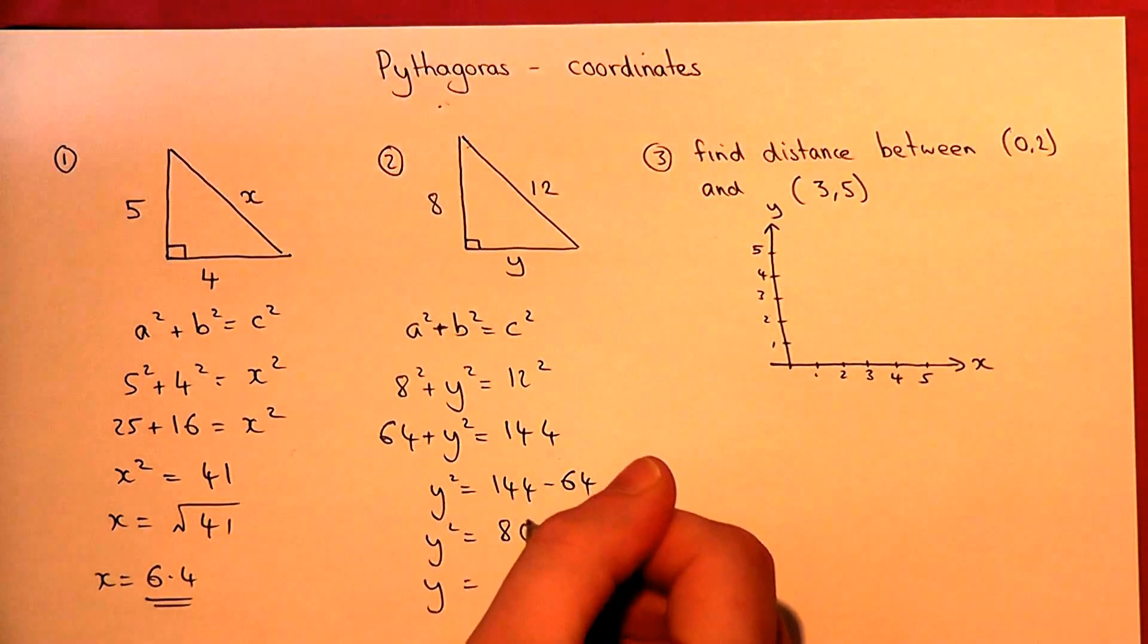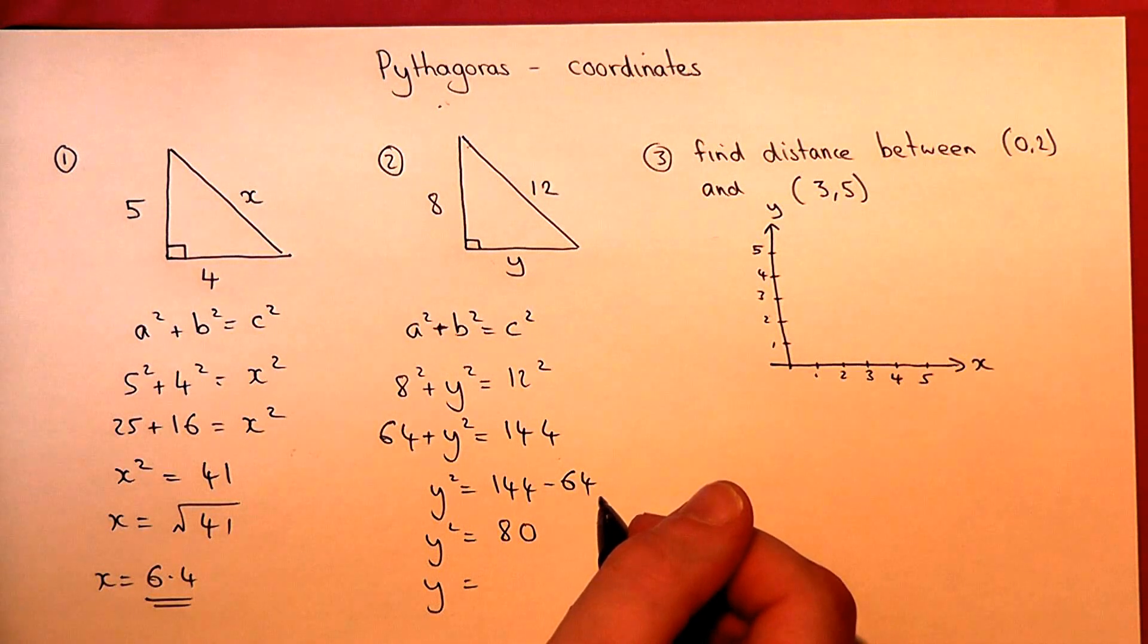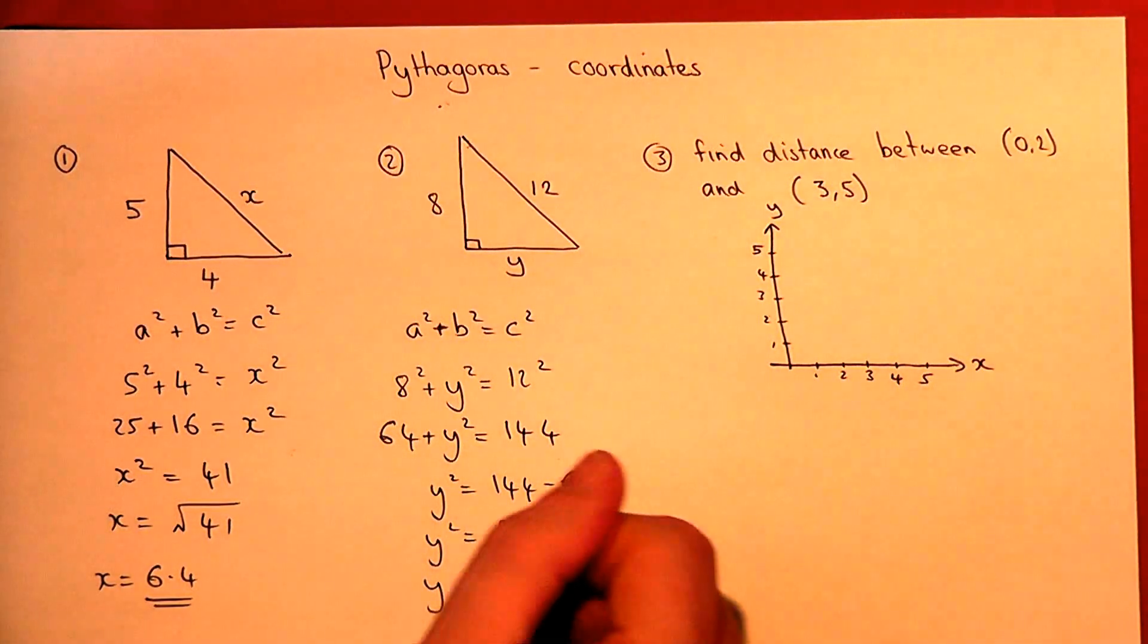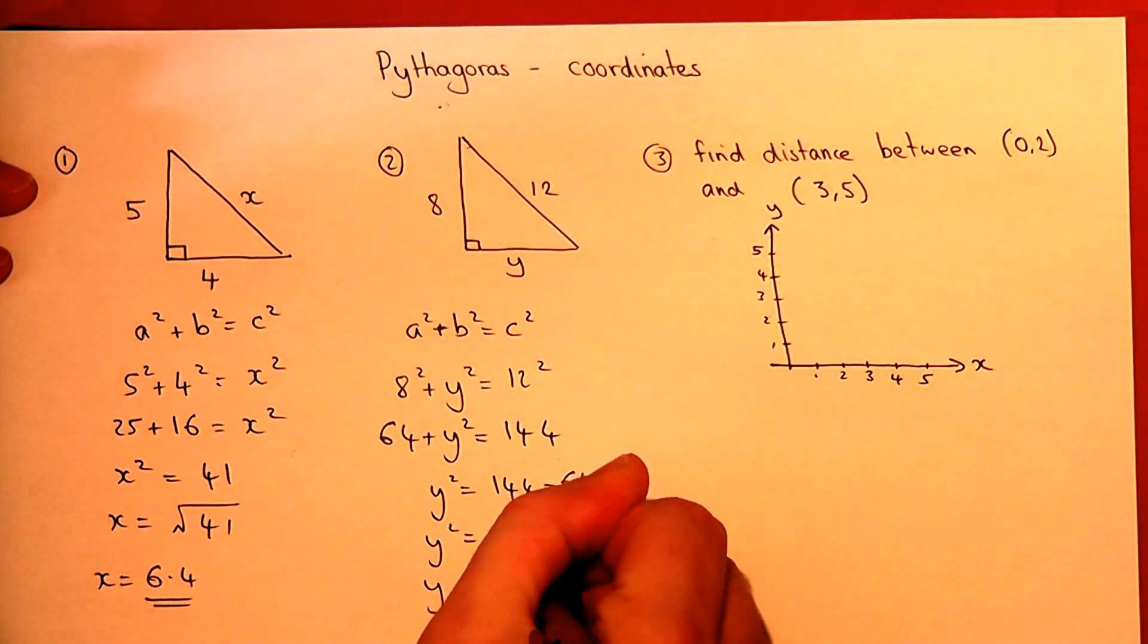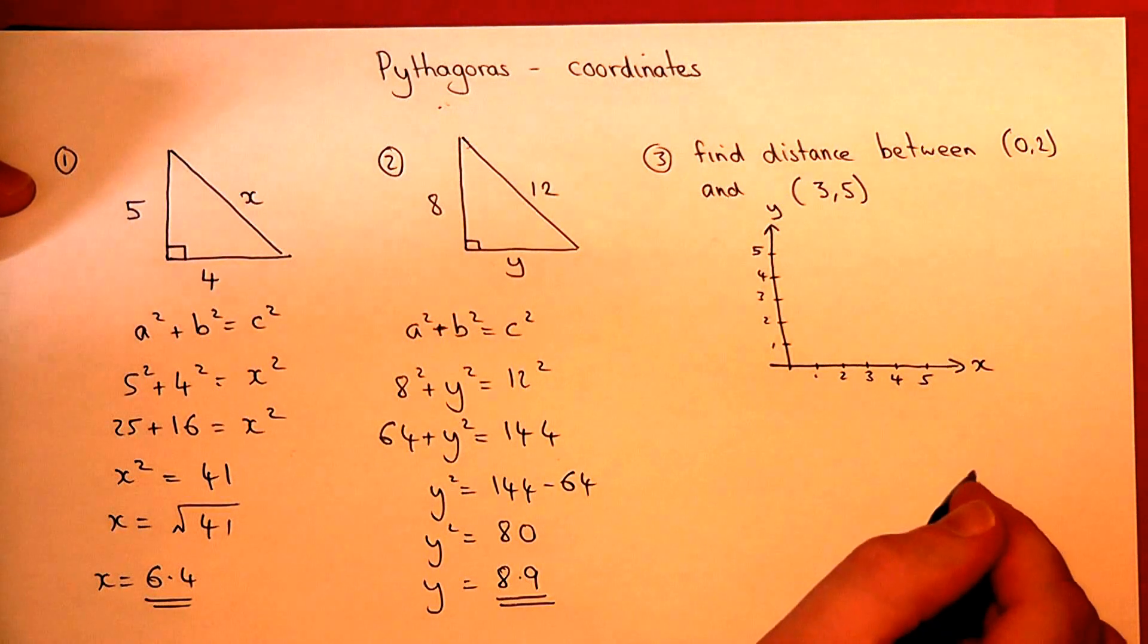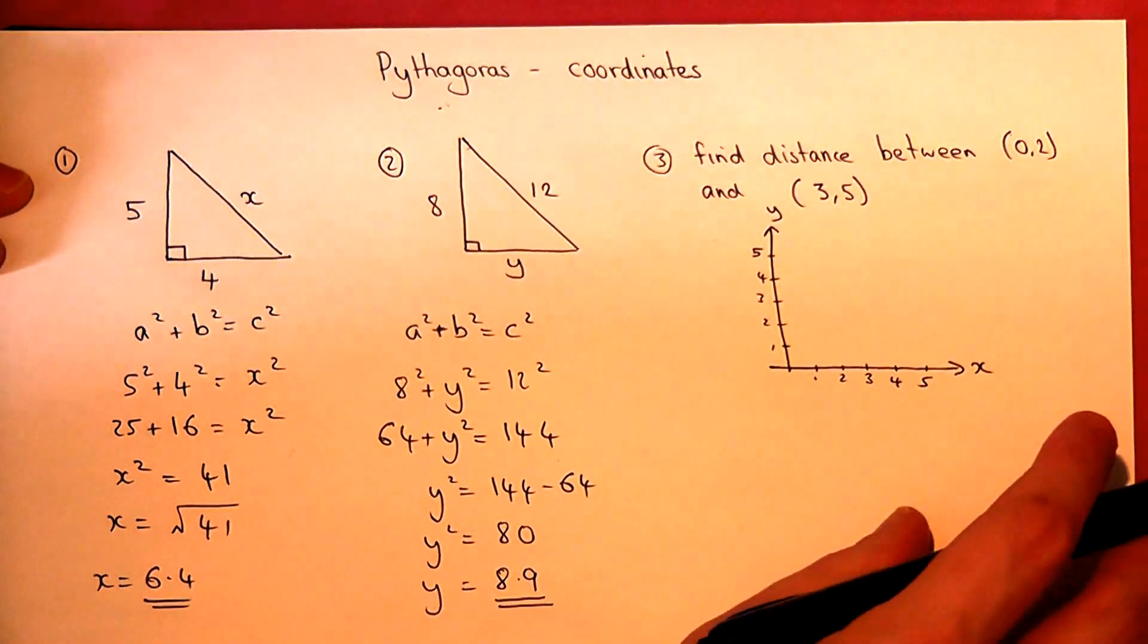So y equals the square root of 80. Root of 80 gives an answer which is just below 9, it is 8.9. So that is the basic use of Pythagoras.